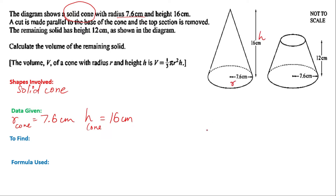A cut is made parallel to the base of the cone and the top section is removed. The remaining solid has a height of 12 centimeters as shown in the diagram. Calculate the volume of the remaining solid.